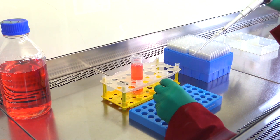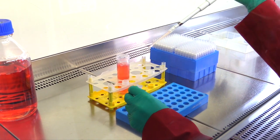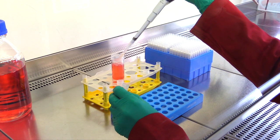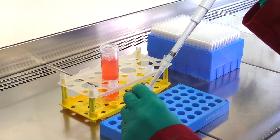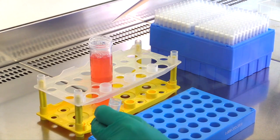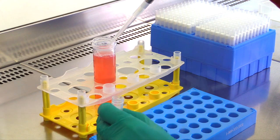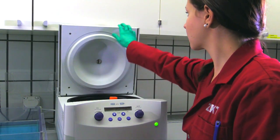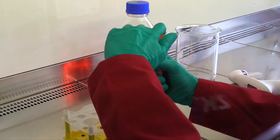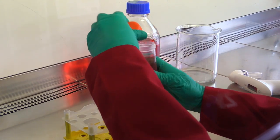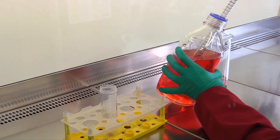In the laminar flow bench, the cells are transferred into preheated medium to dilute the toxic anti-freezing compound which is contained in the freezing medium. The tubes are centrifuged for 5 minutes at 1000g and the supernatant is removed. Resuspension in fresh culture medium then takes place.